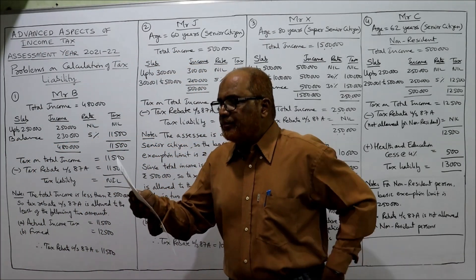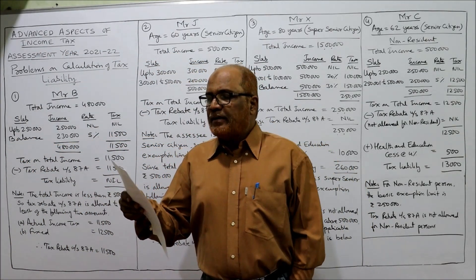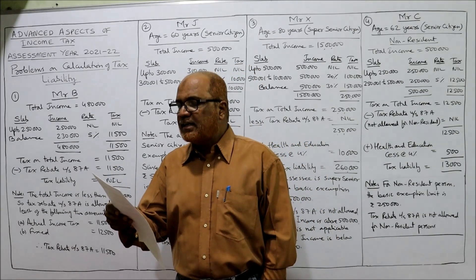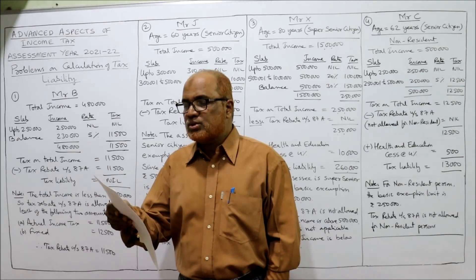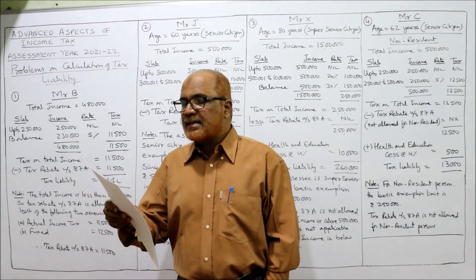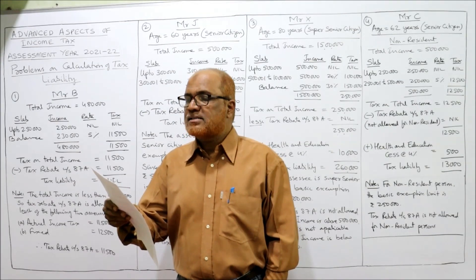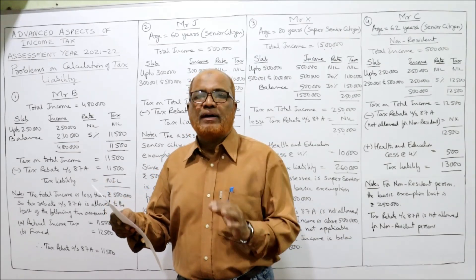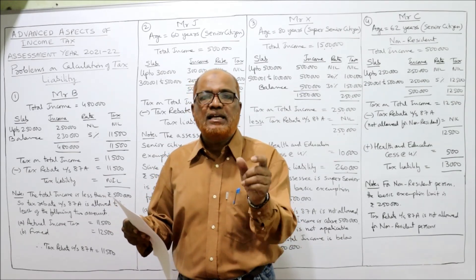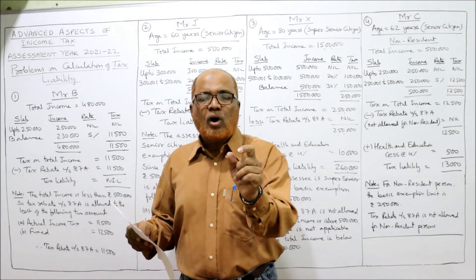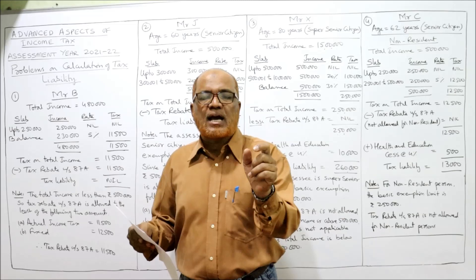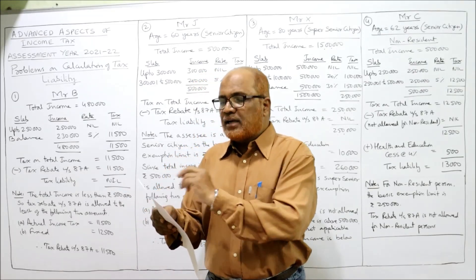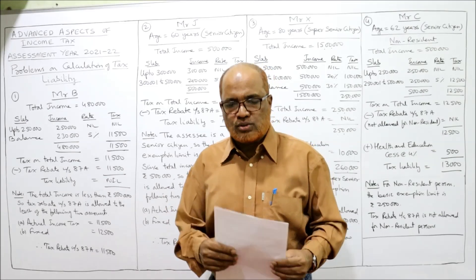Starting the first problem: Mr. B, 45 years old, is a resident of India and has earned a total income of ₹4,80,000. Calculate his tax liability for the current assessment year. First of all, the assessee is 45 years — below 60 years — so he is a non-senior citizen. For a non-senior citizen, the basic exemption limit is ₹2,50,000, and the total income is ₹4,80,000.